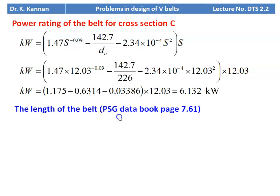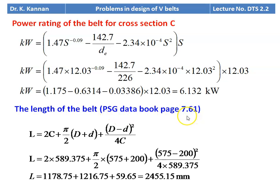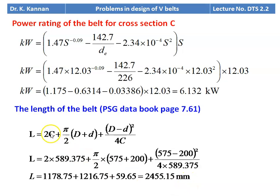We calculate the length of the belt using the equation from page 7.61: L = 2C + (π/2)(D + d) + (D − d)²/4C. Substituting C = 589.375, D = 575, d = 200, we get L = 2455.15 mm. Step by step calculation is provided so you can verify the answer.